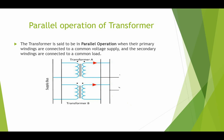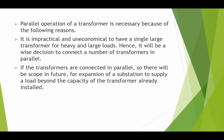Next is the parallel operation of transformers. We can use transformers in parallel, but with certain conditions. A transformer is said to be in parallel operation when their primary windings are connected to a common voltage supply and the secondary windings are connected to a common load. As shown in the figure, we have two transformers, A and B, with primaries connected to a common supply bus and secondaries connected to a common load. Parallel operation of transformers is necessary for the following reasons.